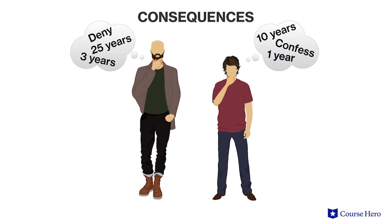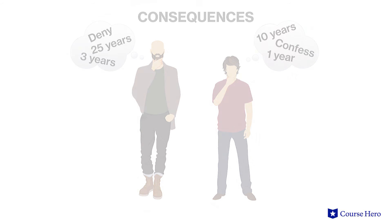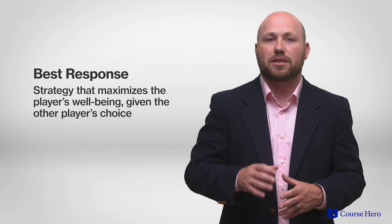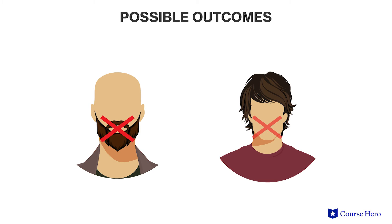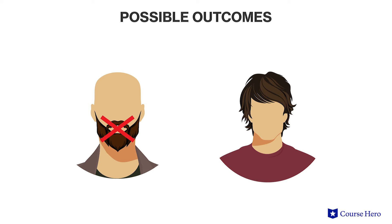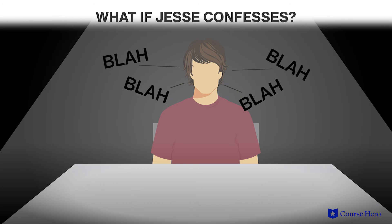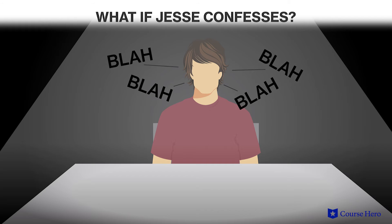What would you do if you were Walter or Jesse? The easiest way to determine a strategy is to look for a player's best response to each option his or her opponent may select. The best response is the strategy that maximizes the player's well-being given the other player's choice. Consider what Jesse will do if he believes Walter will remain silent. If Walter denies, Jesse can also deny and receive a three-year sentence, or he can confess, testify against Walter, and receive only a one-year sentence. Jesse's best choice is to confess, because this reduces his prison sentence.